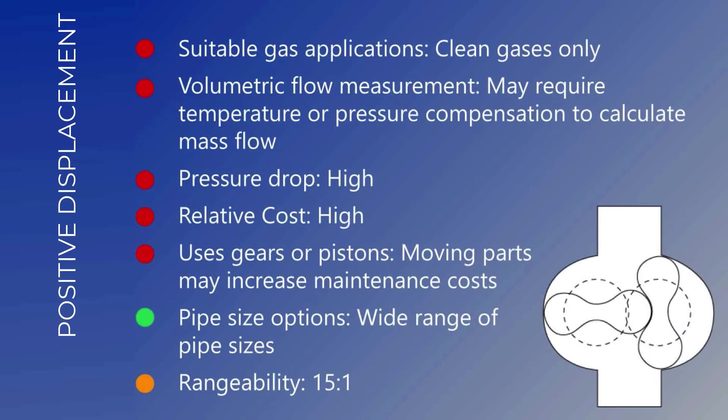Positive displacement flow meters use gears or pistons to divide the flow into fixed metered volumes. The timing of the metered volume determines the volumetric flow rate. They are suitable for clean gas applications, provide volumetric flow measurement, and may require temperature or pressure compensation to calculate mass flow. Positive displacement flow meters have a high pressure drop, are relatively high cost, and use gears and pistons which increase maintenance. They are available in a wide range of pipe sizes and have a rangeability of 15 to 1.